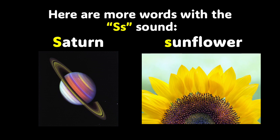Now we have the words Saturn and Sunflower. Saturn is a planet — it's capitalized and it starts with the S sound. And we also have the word Sunflower. Say each word after me: Saturn. Sunflower. You did a fantastic job.